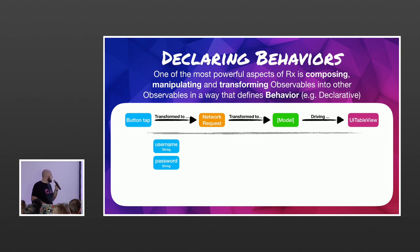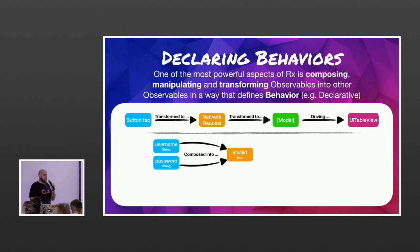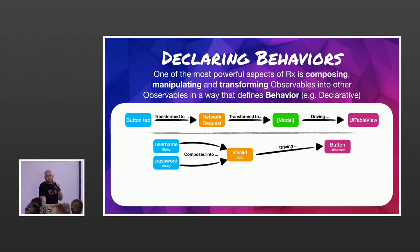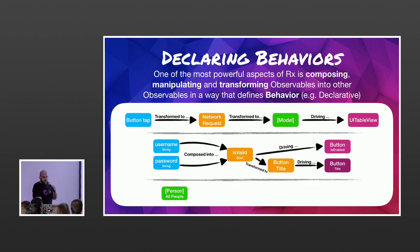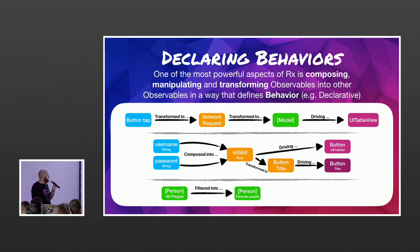In the same way, I can take two separate streams — like a username and password — and compose them into a stream saying 'are these two fields valid?' Then that valid stream can be used to set the isEnabled state of a UIButton, or transformed again to a title to update the button's title. A single stream can also feed different properties and pieces of other streams. Similarly, filtering operations let you take an array of people, filter to only your favorites, and drive that into a UI table view.